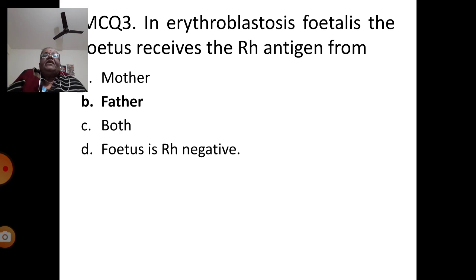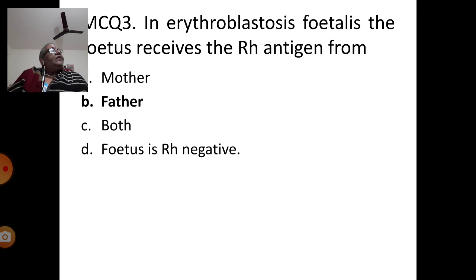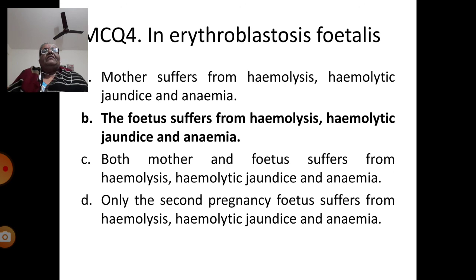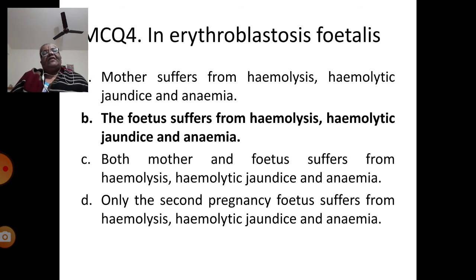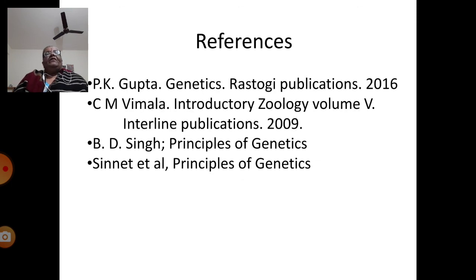Question 3: In erythroblastosis fetalis, the fetus receives the Rh antigen from (a) mother, (b) father, (c) both, (d) fetus is Rh negative invariably. The answer is B — from the father, from the paternal side. Question 4: In erythroblastosis fetalis, who suffers from hemolysis, hemolytic jaundice, and anemia? The answer is B — the fetus suffers, whether in first or second pregnancy.